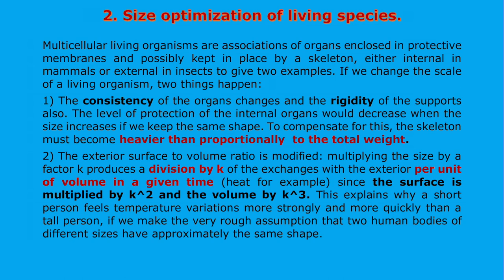Secondly, the exterior surface-to-volume ratio is modified. Multiplying the size by a factor k produces a division by k of the exchange of the exterior per unit of volume in a given time — heat, for example — since the surface is multiplied by k squared and the volume by k cubed. This explains why a short person feels temperature variations more strongly and more quickly than a tall person, if we make the rough assumption that two human bodies of different sizes have approximately the same shape.